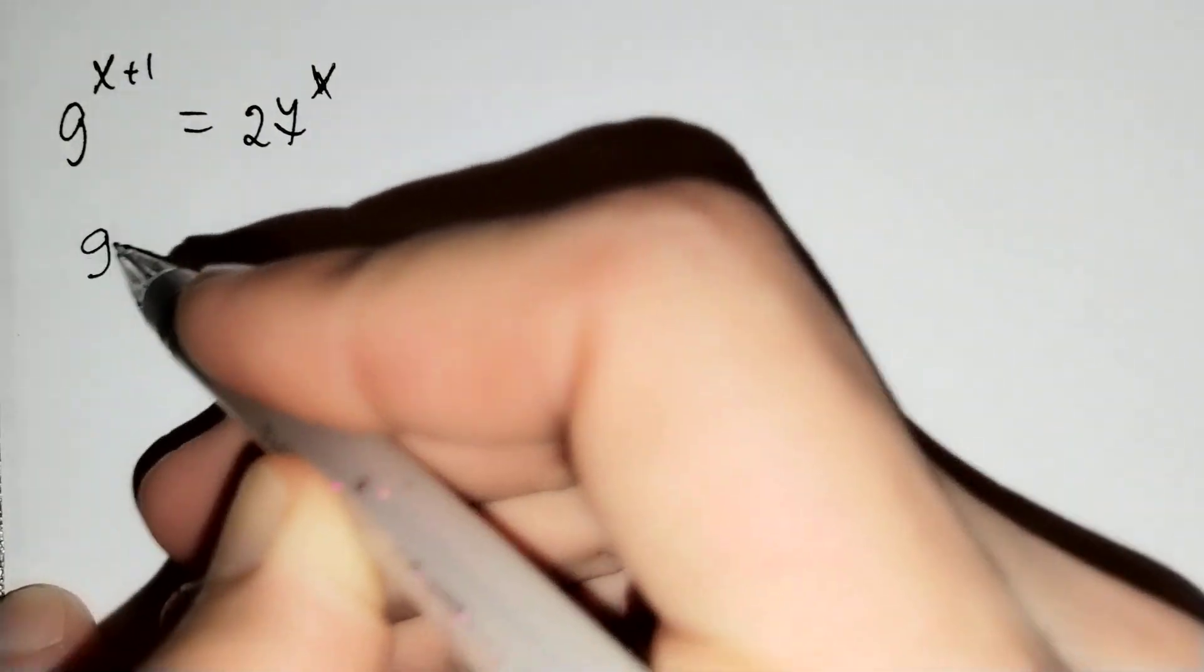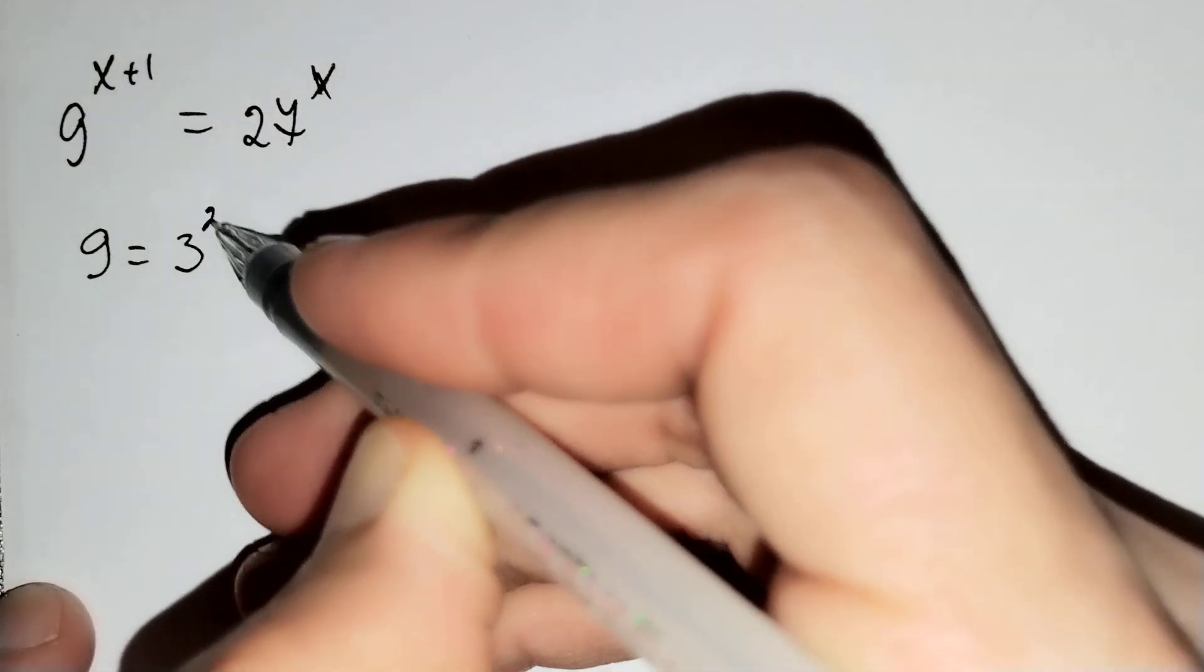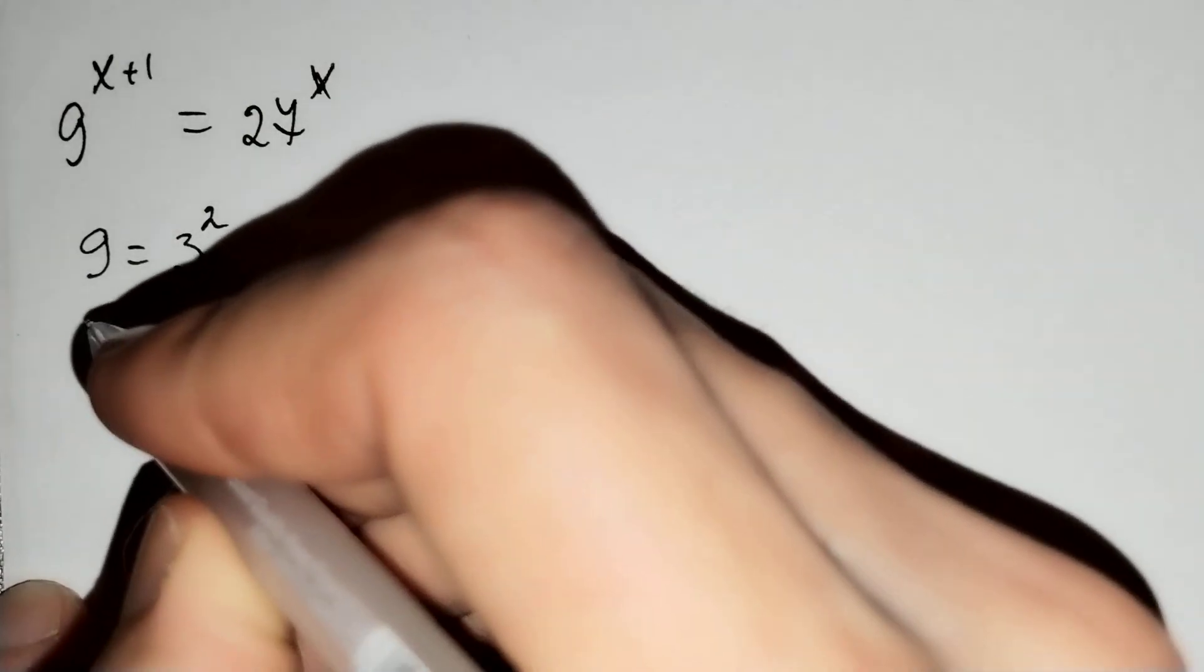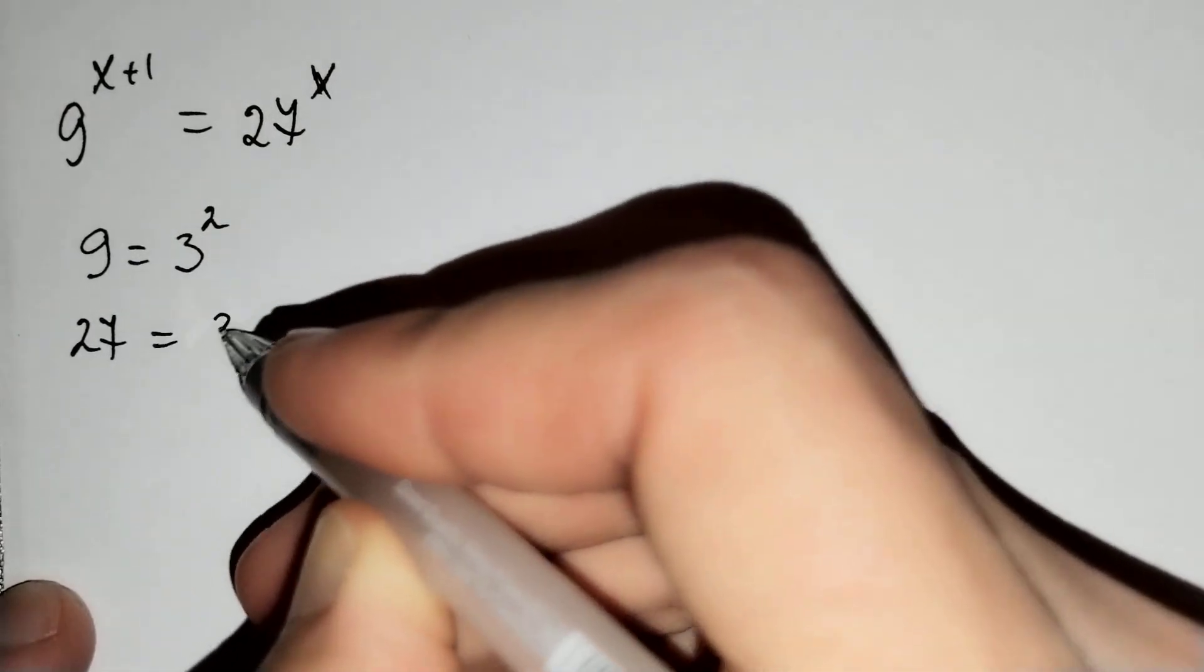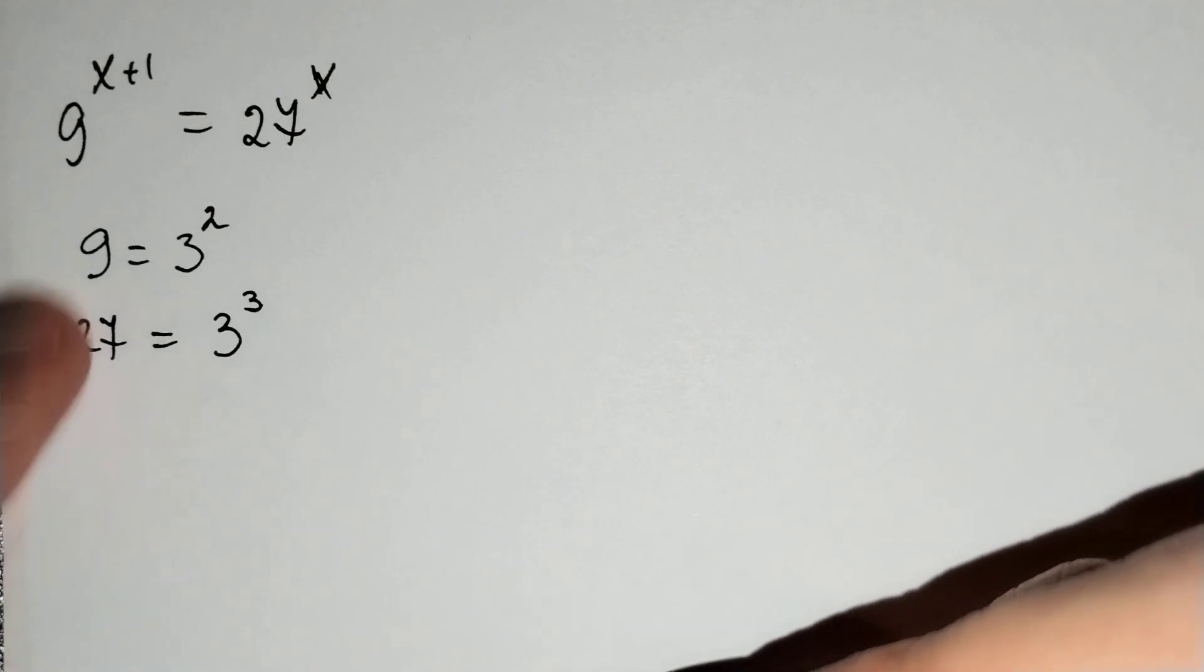Firstly, we know that 9 equals 3 squared and 27 equals 3 cubed.